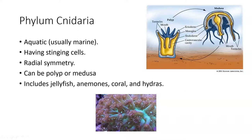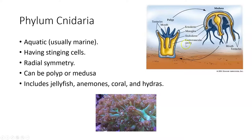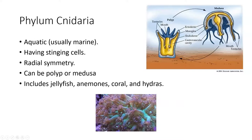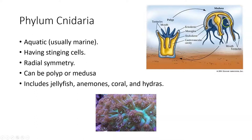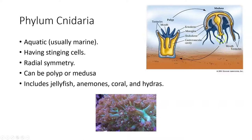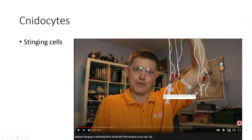Polyps tend to be attached to a base or rock at the bottom of the water and wave their tentacles upward — like coral. The other body plan is the medusa, which is the typical free-swimming jellyfish form with tentacles hanging down. The lab manual mentions cnidocytes — the stinging cells. This was only recently captured on microscope, and I wanted to show you how they actually work.